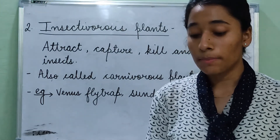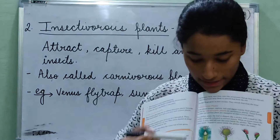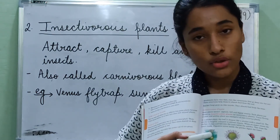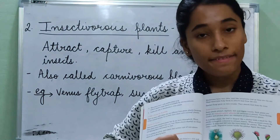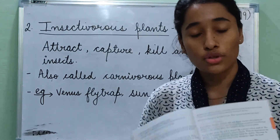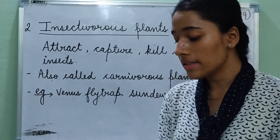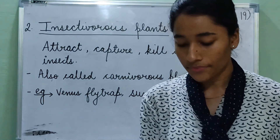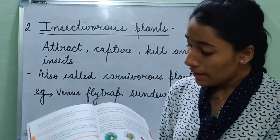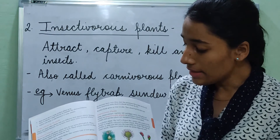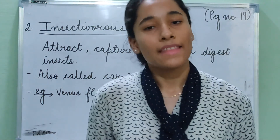When an insect enters the pitcher, it slips and falls into the digestive juice below. This traps the insect inside, and the digestive juices digest the insect. That is all for today. Thank you.